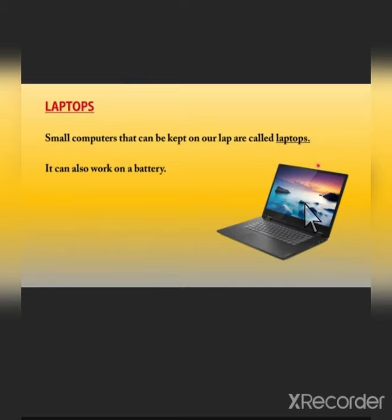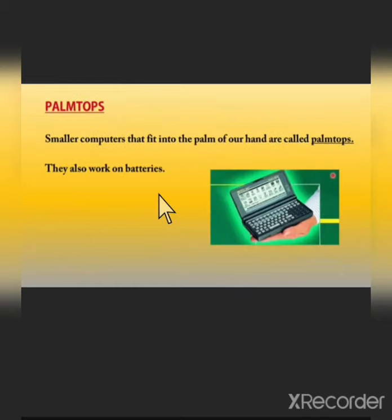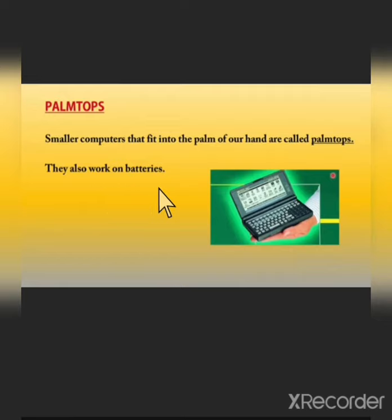The next type of computer is a laptop. Small computers that can be kept on our lap are called laptops. They can also work on a battery, so you can carry them anywhere. Smaller computers that fit into the palm of our hand are called palmtops. They also work on batteries.